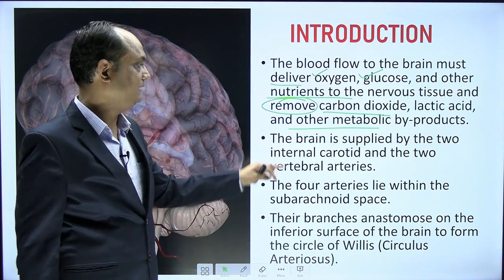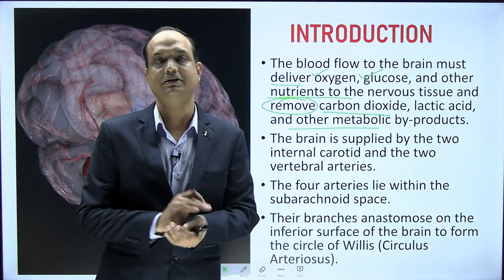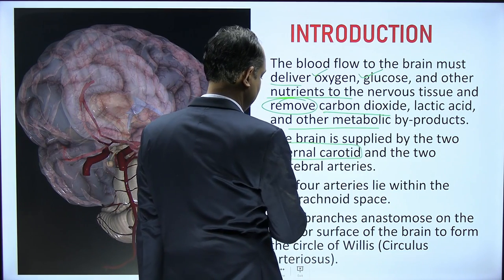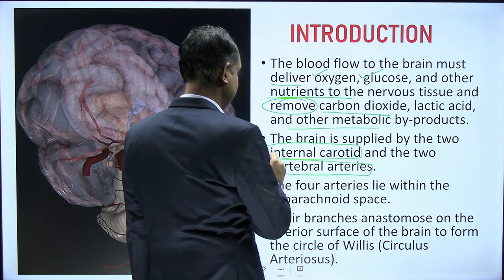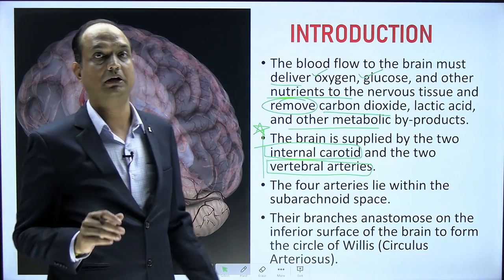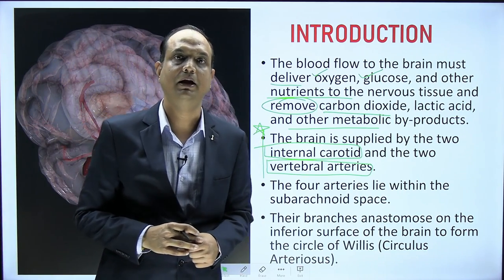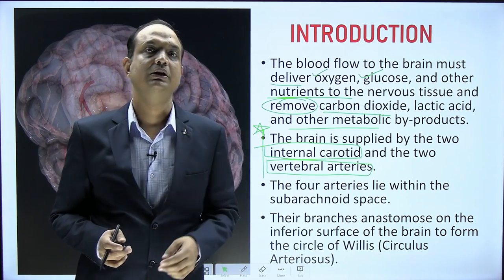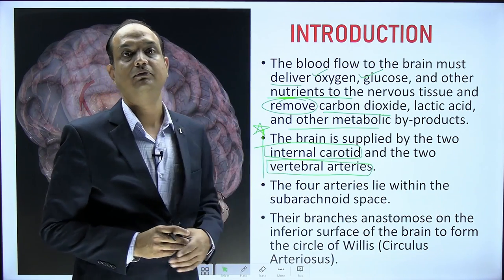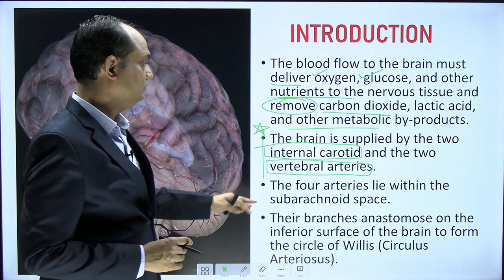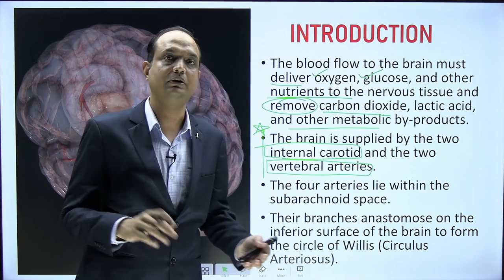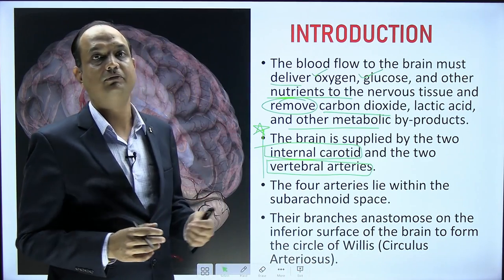The brain is supplied by two major blood vessels: the internal carotid artery and the vertebral artery. These are the only two sources. One is the internal carotid artery and another is the vertebral arteries, giving a total of four arteries — right and left internal carotid, and right and left vertebral arteries.